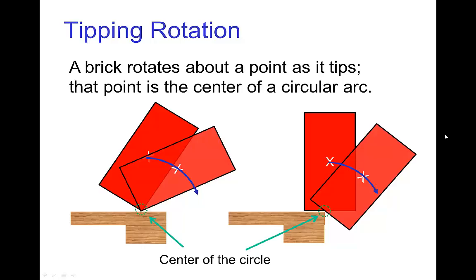If you think of a brick that is off balance and is tipping over on a table, the motion has a fixed point that it's turning through, and that is the center of the circular arc for that rotation.